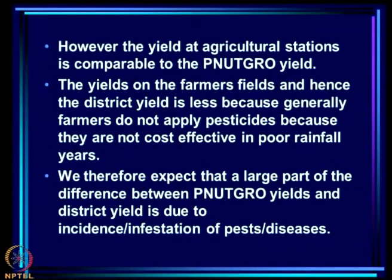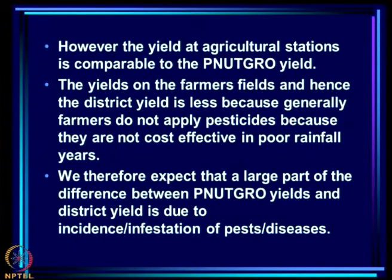The yields on farmers' fields and hence the district yield are lower because generally farmers do not apply pesticides, as they are not cost-effective in poor rainfall years. Farmers do not know which years will have reasonable rainfall, so they do not invest in pesticide application. Therefore, a large part of the difference between PeanutGrow yields and district yield is due to incidence and infestation of pests and diseases.